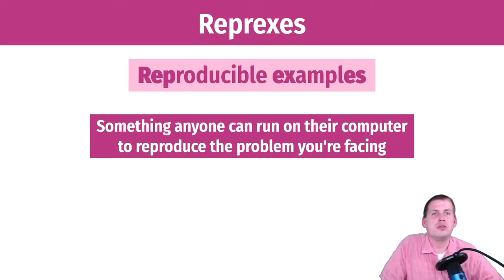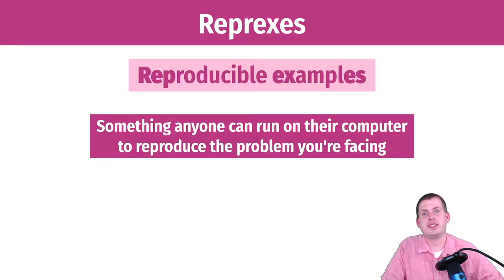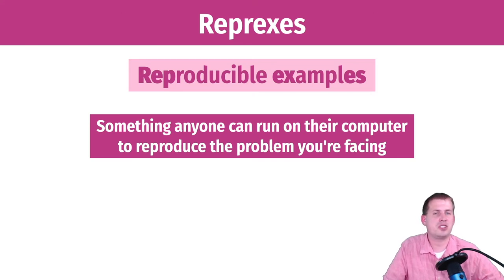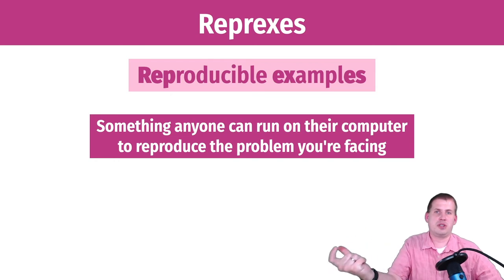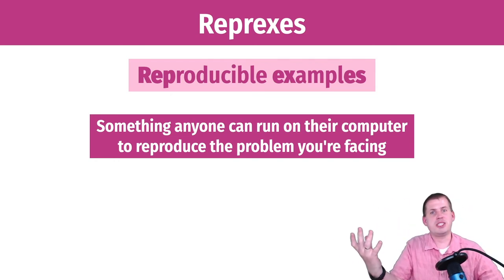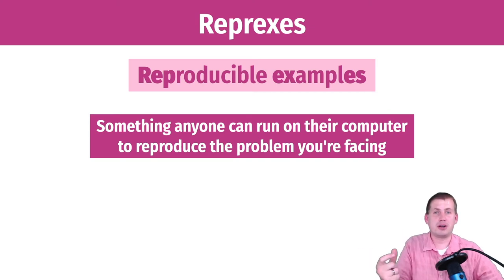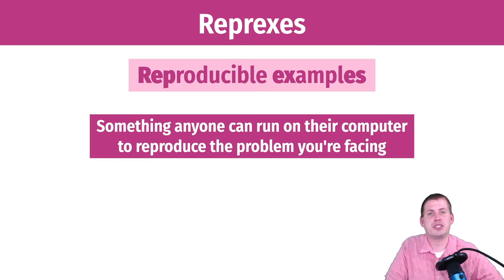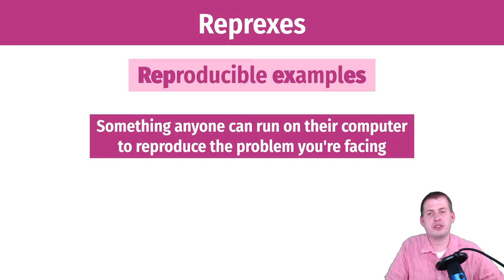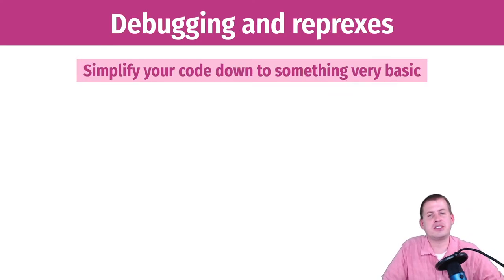Creating a reprex forces you to think about the very simplest version of your problem. Often, people won't have the same data you're working with. If you're loading a dataset just fine but can't plot it due to an error, switch to a different built-in dataset. The reason we keep using the MPG dataset or gapminder is because anybody who opens R can use those — they don't have to download a CSV from somewhere. You want to think about what other people have on their computers and simplify it down to something they can run.